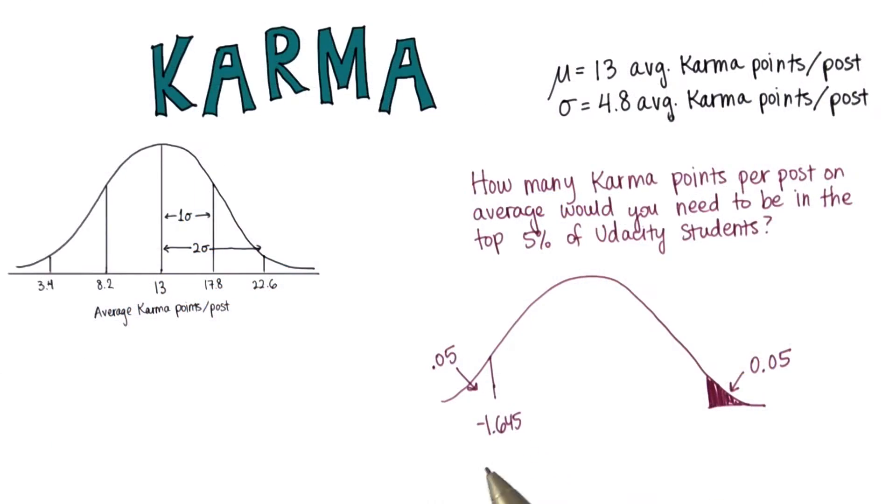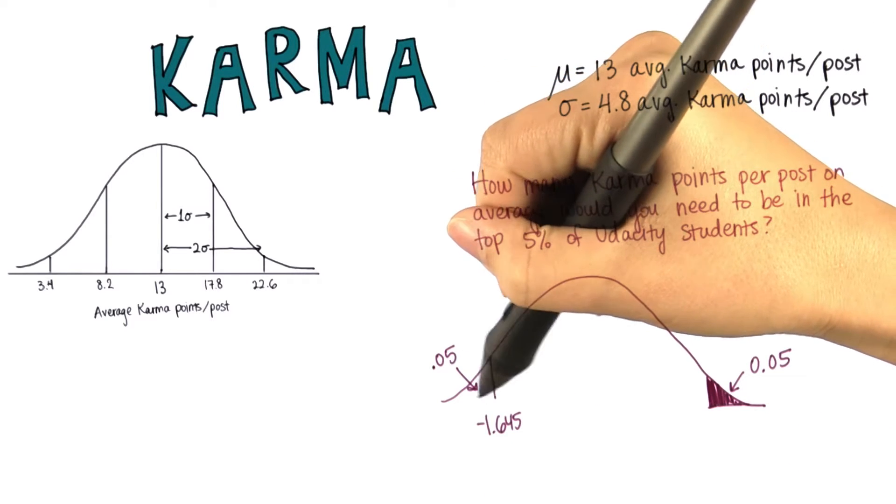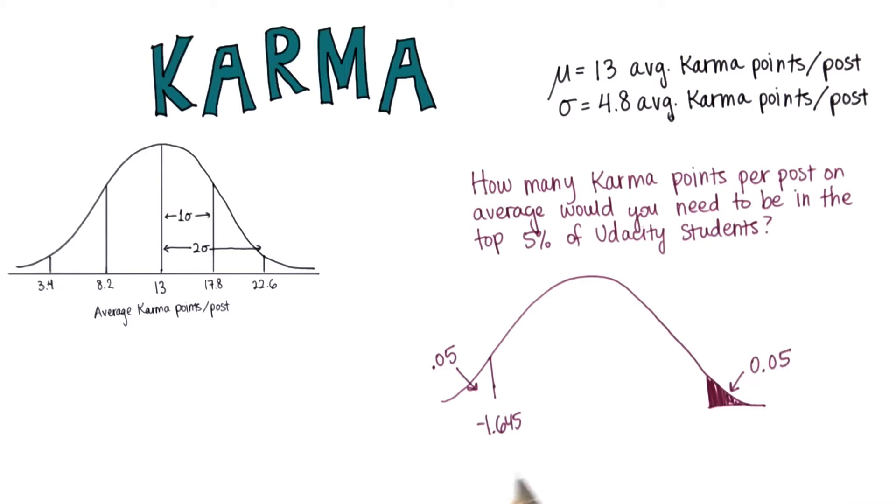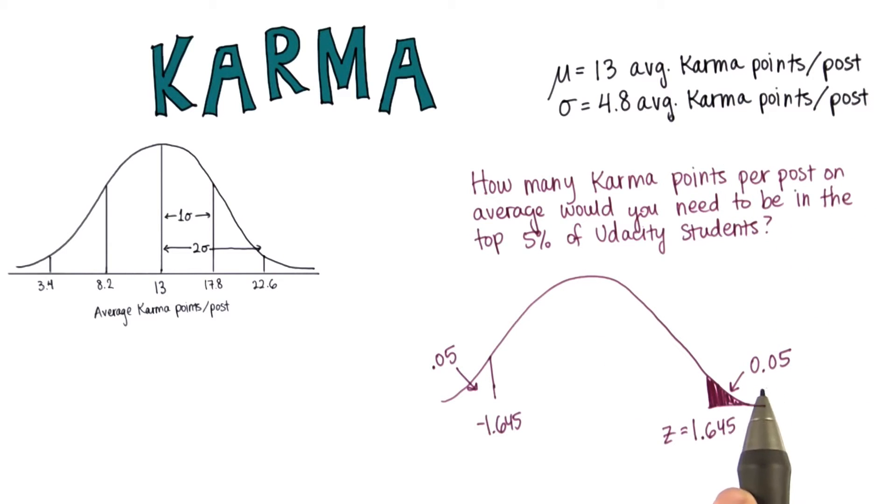Note that we found the z-score that corresponds to 0.05 being less than that. So this z-score is just the positive value of this, positive 1.645. Since the normal distribution is symmetric, then 0.05 would be greater than the positive of that z-score.